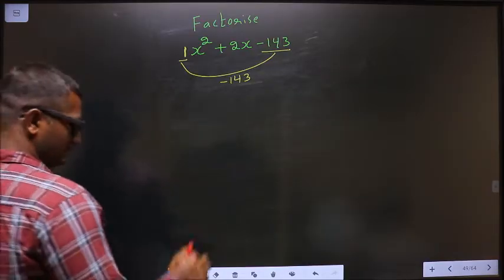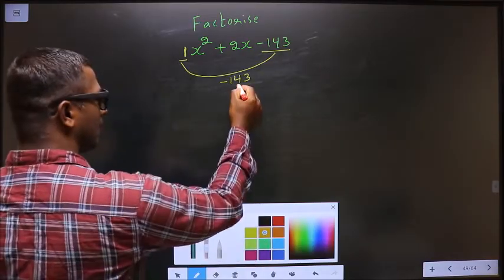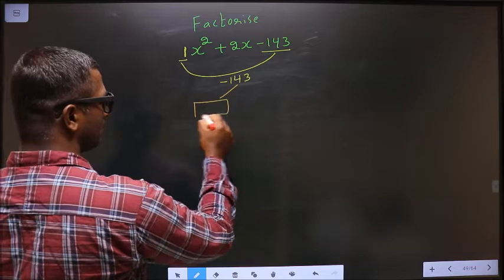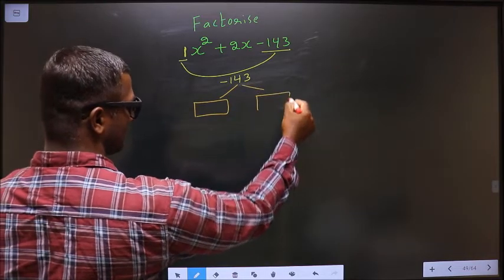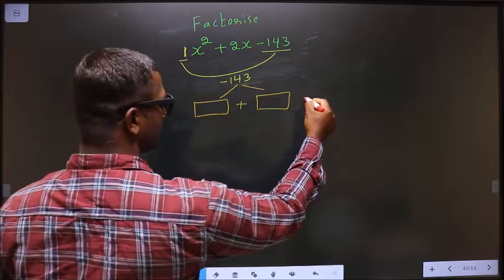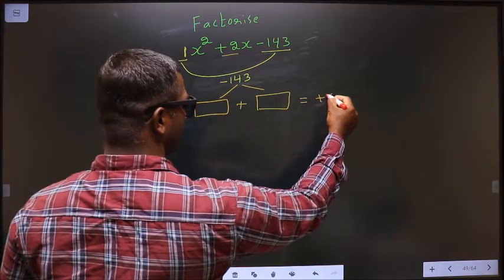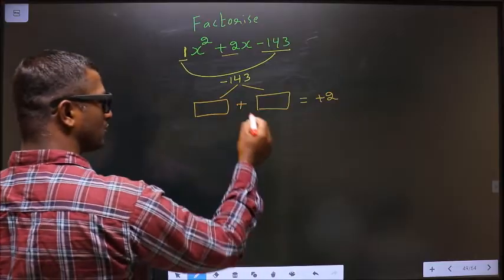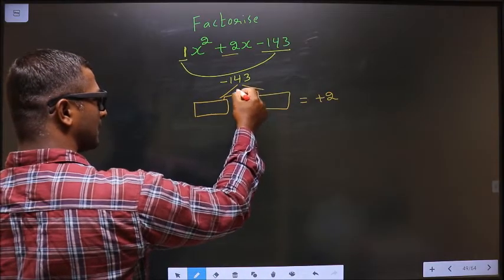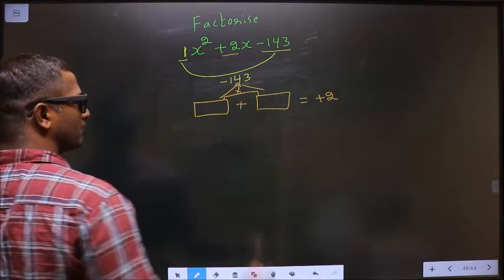Next, now you should look out for 2 numbers such that when you add the 2 numbers, you should get x coefficient that is plus 2 here, and also when you multiply these 2, you should get minus 143.